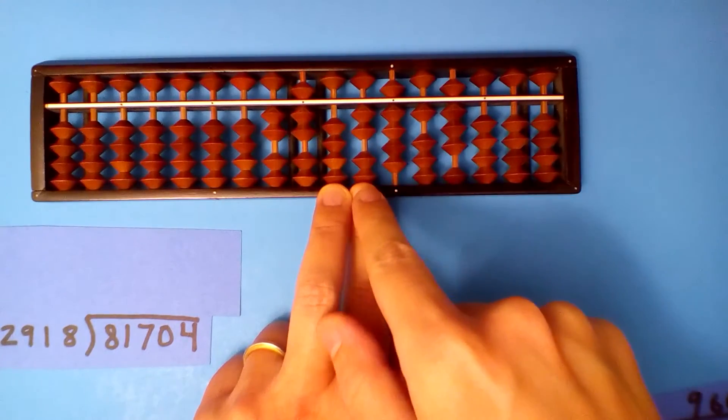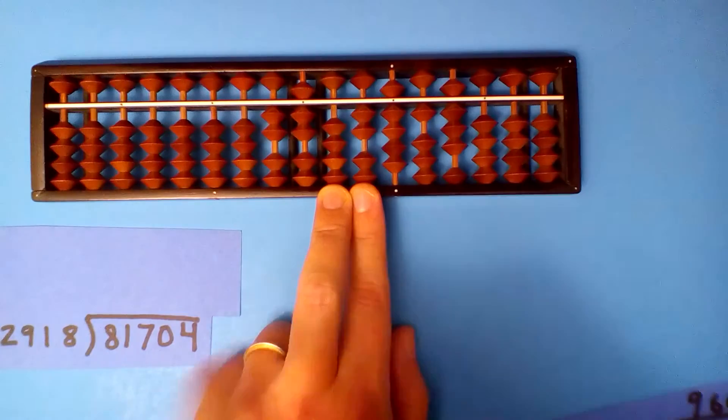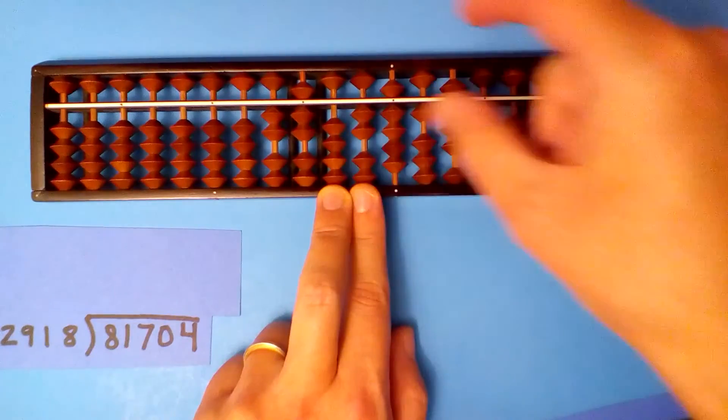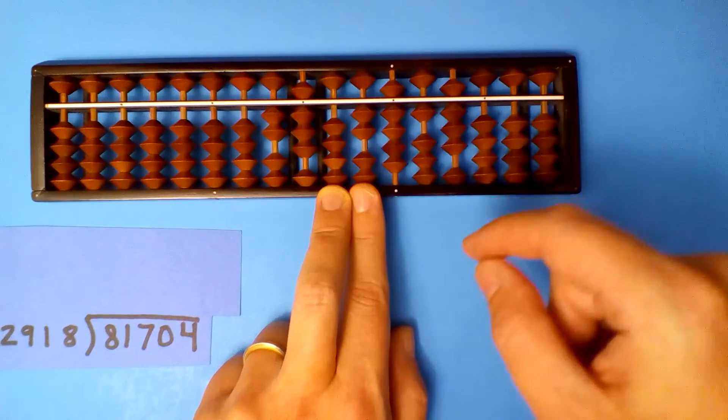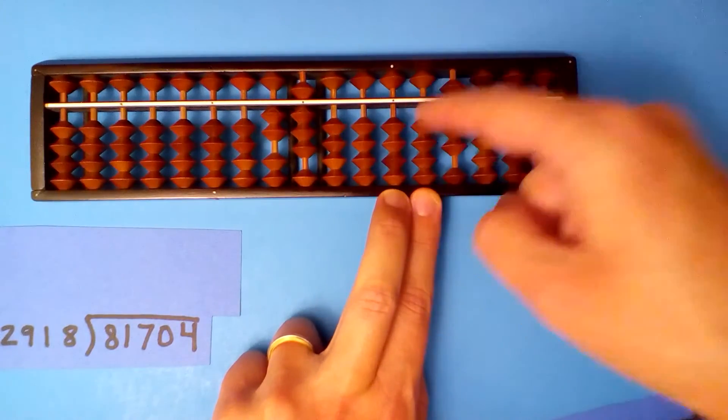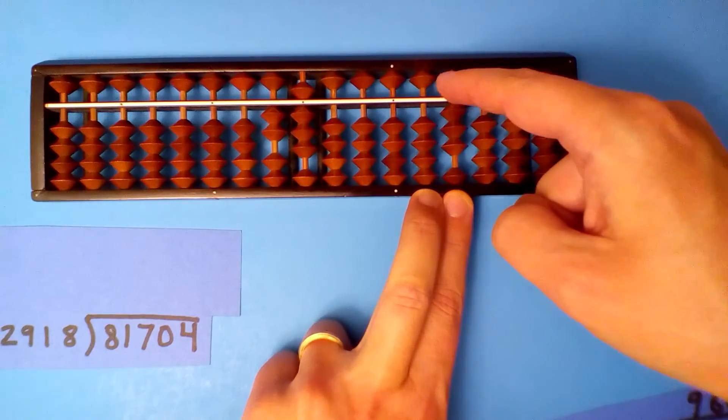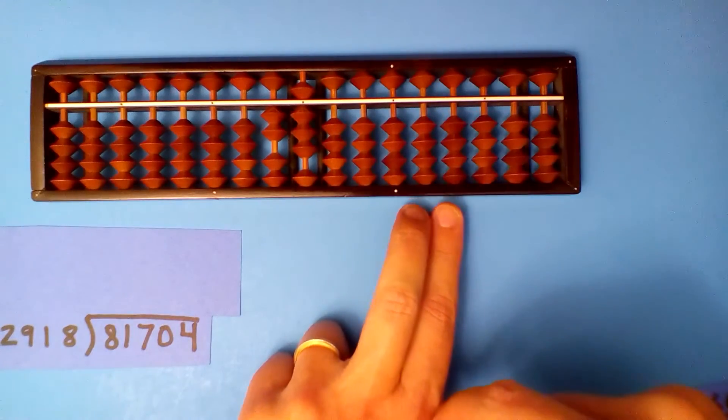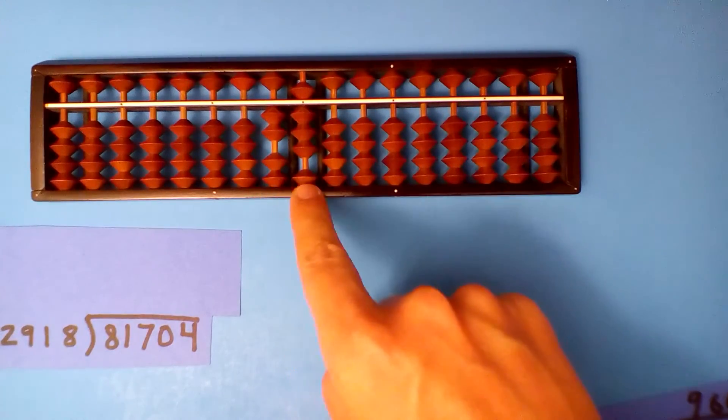Now how many times does 2 go into 2? Well, if you look you can see it's 2, 9, 1, 8, so really it'll divide perfectly. 1. 1 times 2 is 2, 1 times 9 is 9, 1 times 1 is 1, and 1 times 8 is 8. We got it. Our quotient is 28.